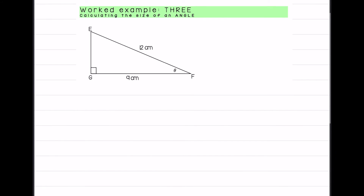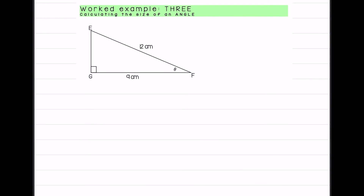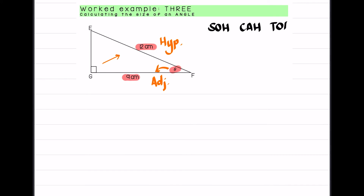For the last example, I have triangle EGF and I need to determine what do I have, what do I need. I'm given theta, nine centimeters, and 12 centimeters. In relation to that theta, the nine centimeters is the adjacent side, and the 12 centimeters is the hypotenuse — it's the hypotenuse because it's the side opposite the right angle. Using SOH-CAH-TOA, I have the adjacent and the hypotenuse, so I'm going to use cos.